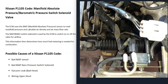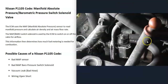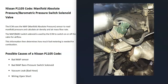Also check the vacuum hoses going to that barometric pressure switch solenoid. If there are any problems with them — if they're old, cracked, or leaking — this is going to cause a vacuum leak and issues. Be sure to check your hoses and confirm they're not damaged. Keep in mind that anything wrong with the wiring going to the MAP sensor or the pressure switch is going to cause the same symptoms as a bad component.